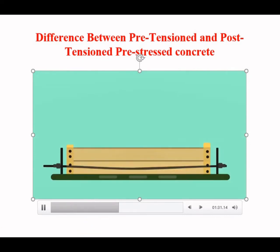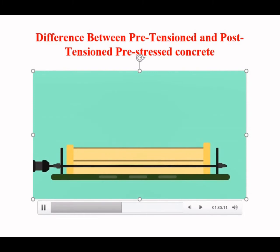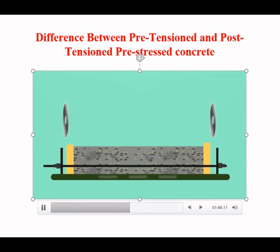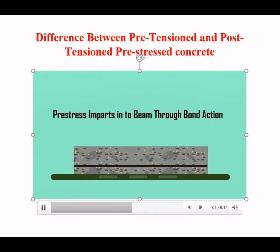In pretensioned concrete, the tendons are tensioned before pouring of concrete. The tendons are initially tensioned and anchored at both ends, then concrete is poured over it and cured. When the concrete attains the desired strength, the tendons are released and projections are cut out. The pre-stress is imparted through bond action.